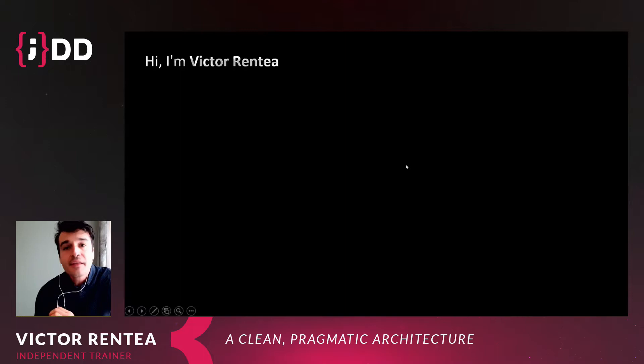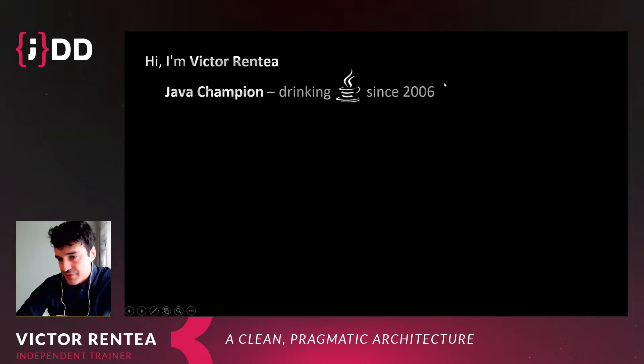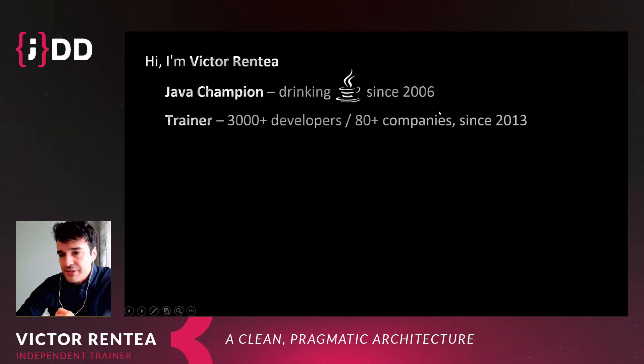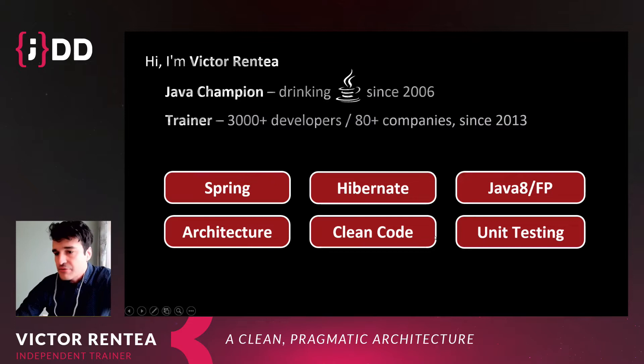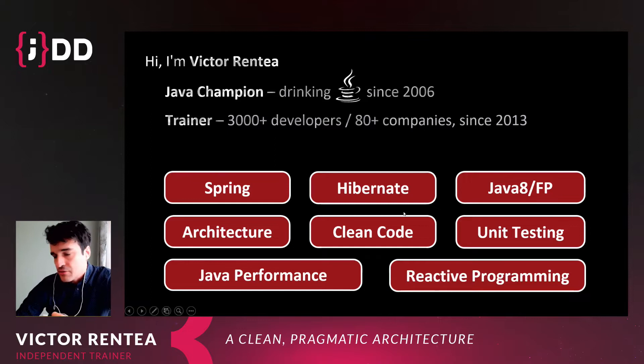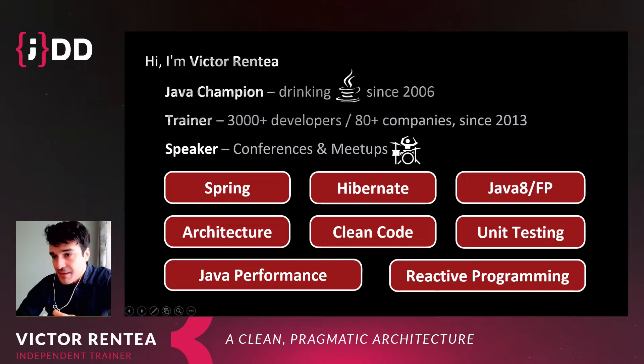Quick words about me. I'm Victor, I'm a Java Champion, coding Java for 15 years already. I do a lot of training in many companies throughout the world. My topics are Spring, Hibernate, Java functional programming, domain-driven design, clean architecture, clean code, unit testing, performance, and reactive programming — basically every day. I also do conferences and meetups like today.